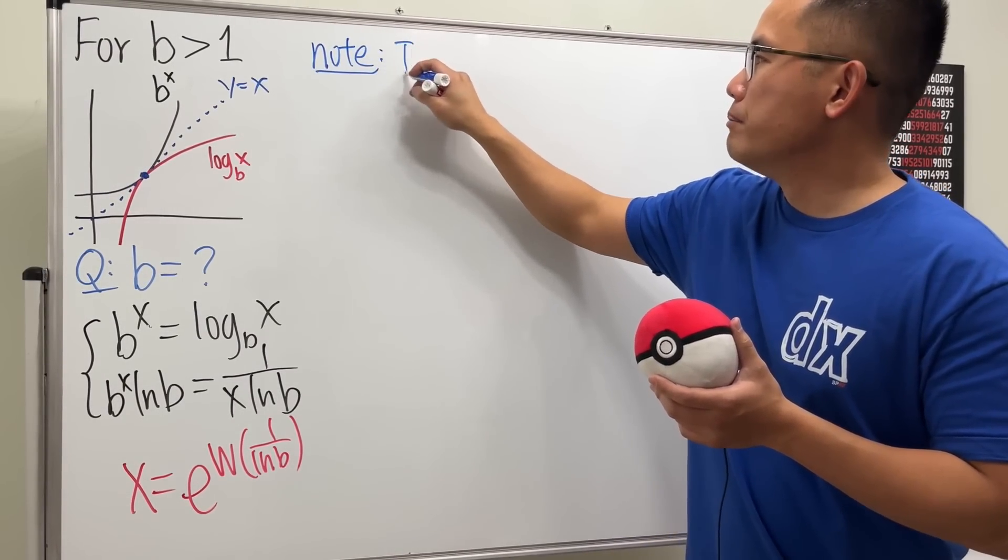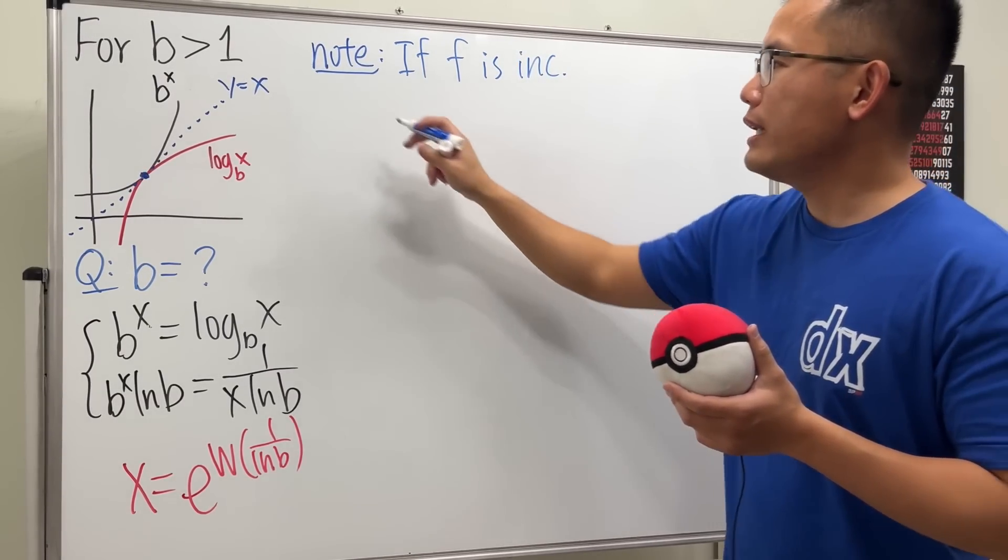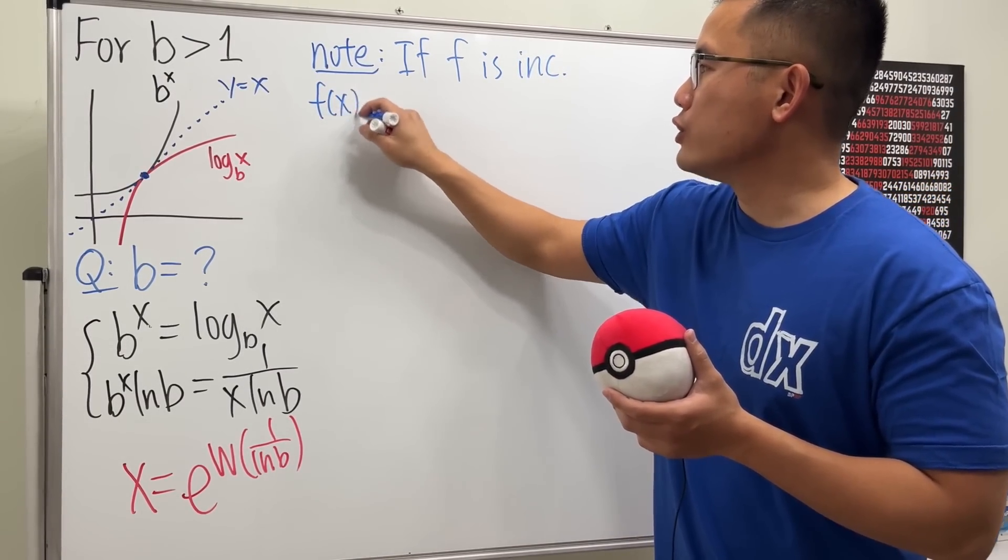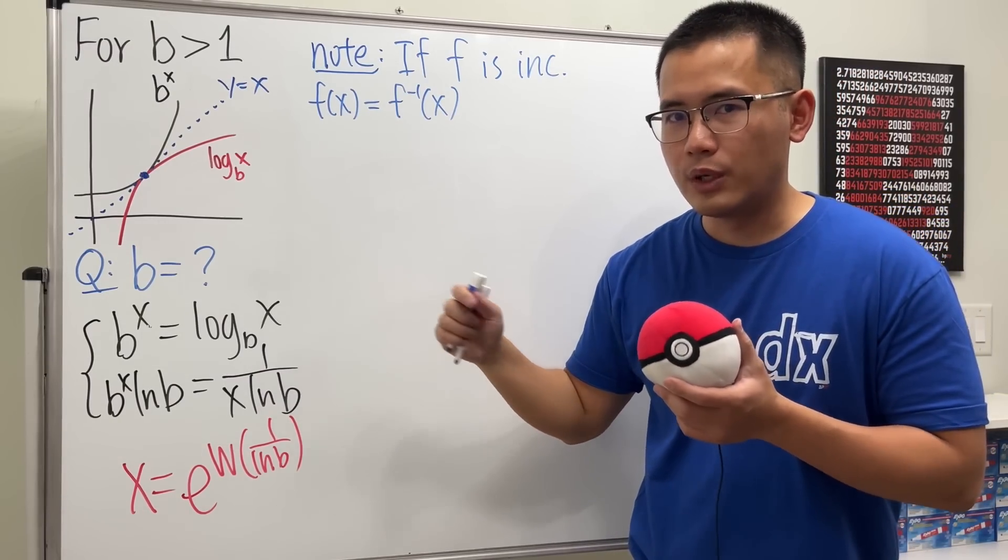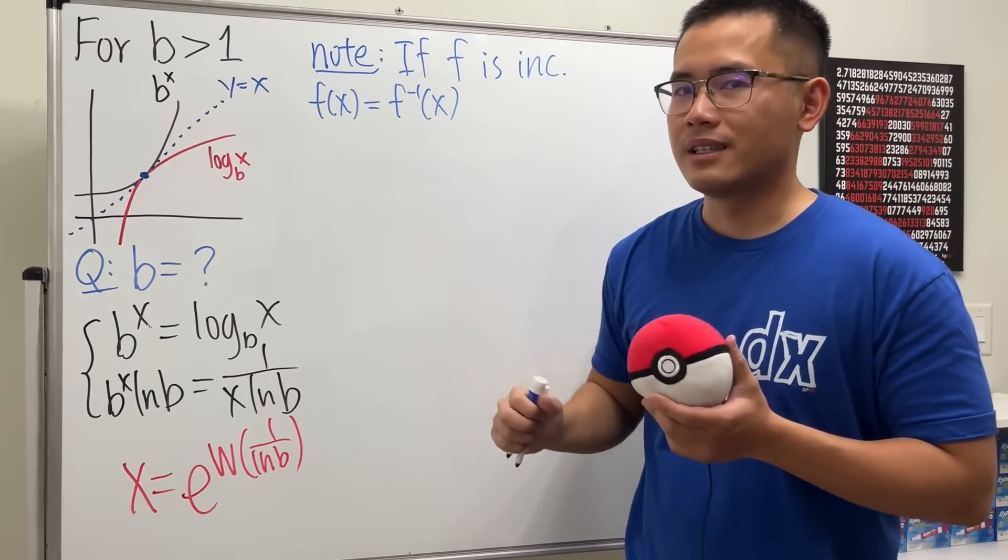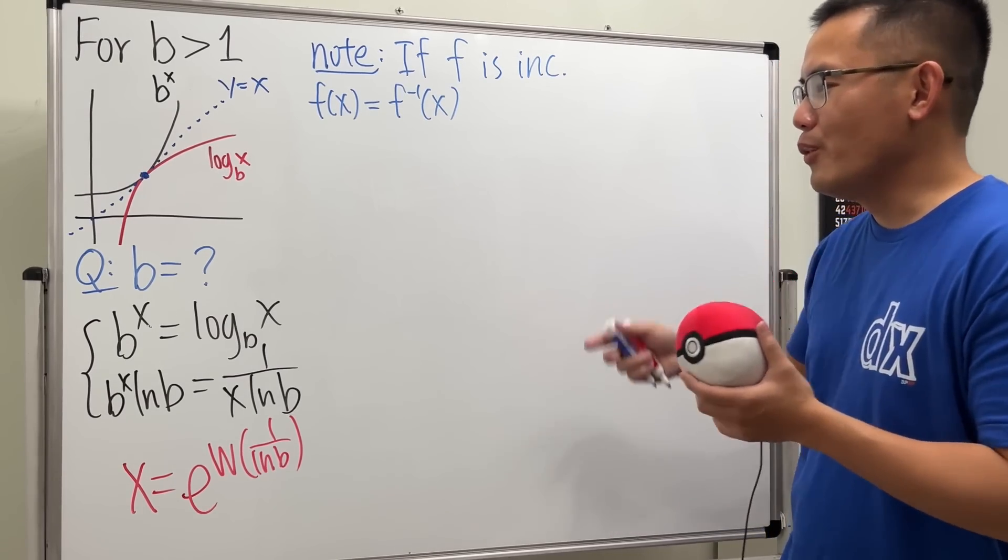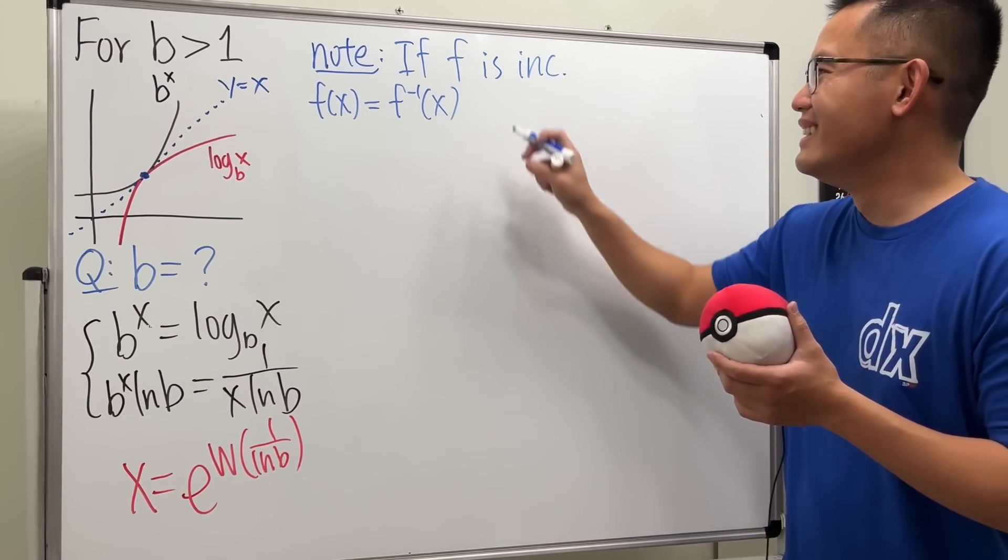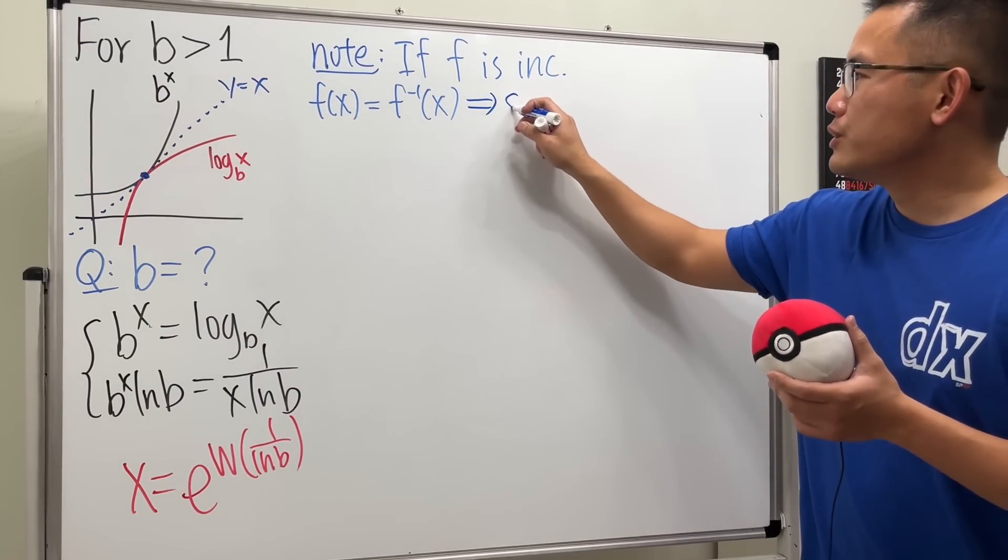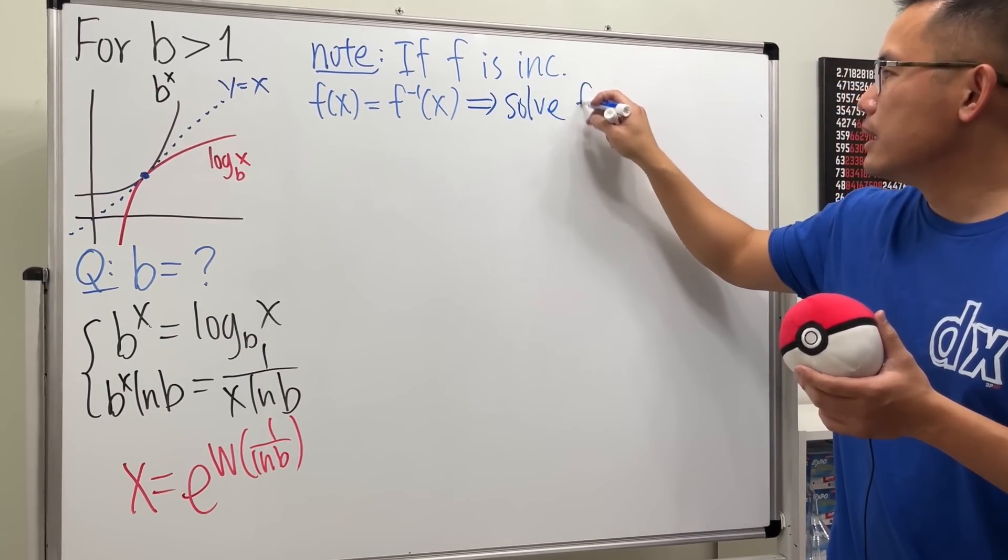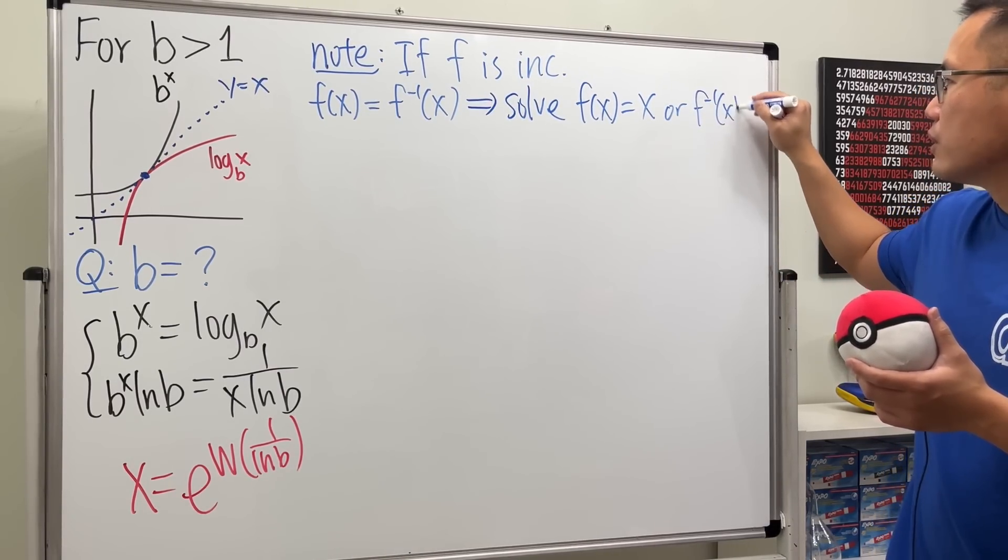In order for this idea to work, let me write down this note for you: we must have the function to be increasing, so that whenever we look at the equation f(x) equals its inverse—by the way, this is not a functional equation we're solving, I know it looks like one, but we're just trying to find an x value to make this work. Instead of solving that equation, we can actually just solve f(x) equals x, and either this or that will make the whole equation so much easier.